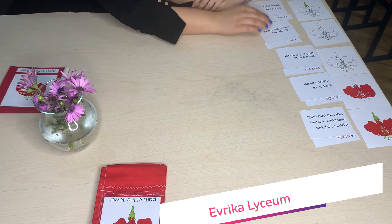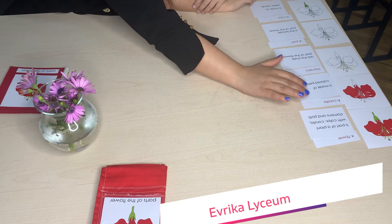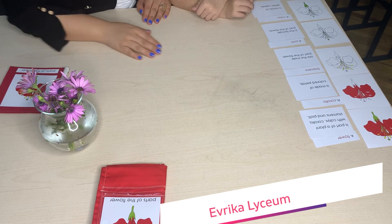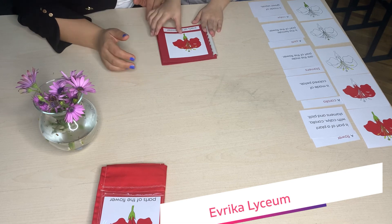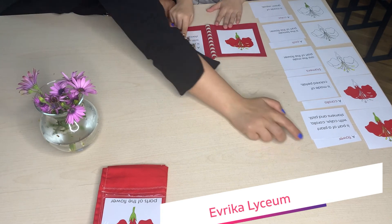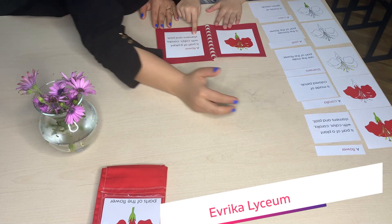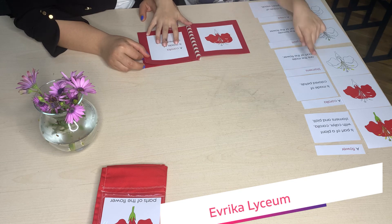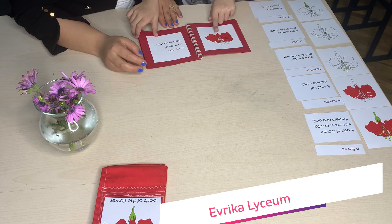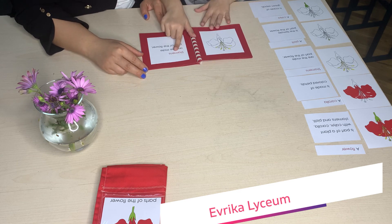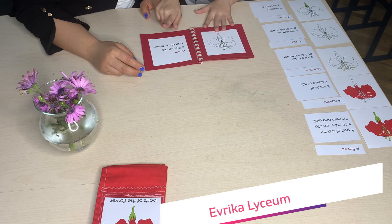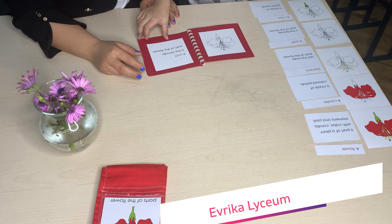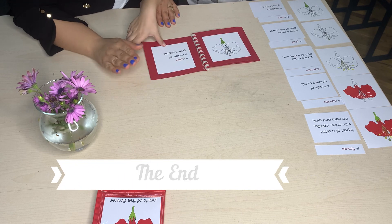Before we collect our items and place them back, we can check our answers with the definition booklet. Let us open and check. A flower is a part of the plant with a calyx, corolla, stamen, and pistil — correct. A corolla is made of colored petals — correct. Stamens are the male part of a flower — correct. Pistil is the female part of the flower. Calyx is made of the green sepals.